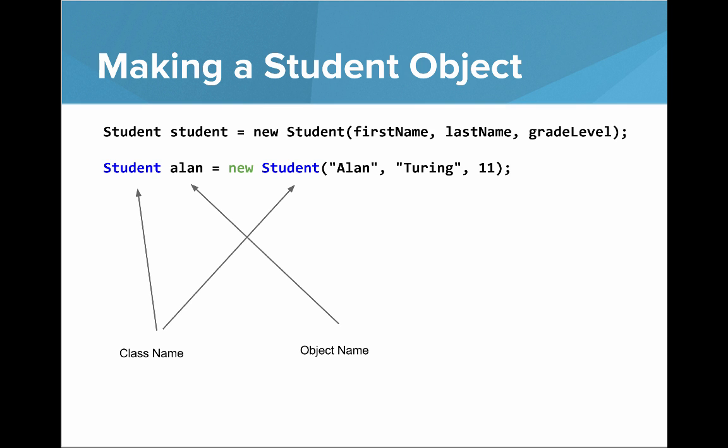And say we want to go and make a student object. We have this format here, we say Student student equals new Student, and then we pass in the first name, last name, and grade level. You can see the class name Student with a capital S is the type. And Alan here, that's the name of the object.